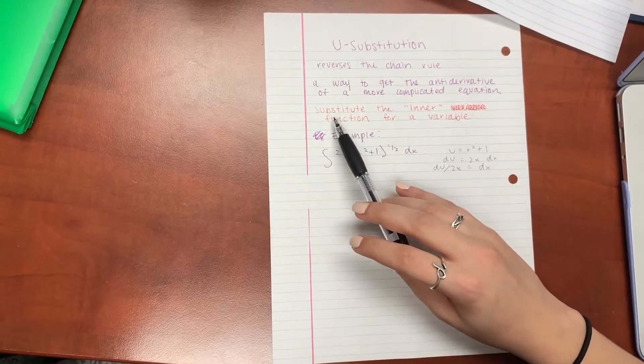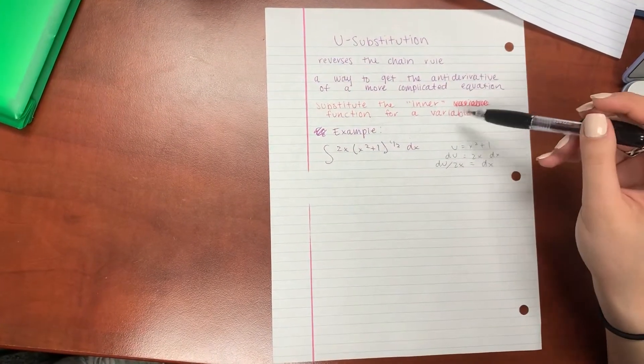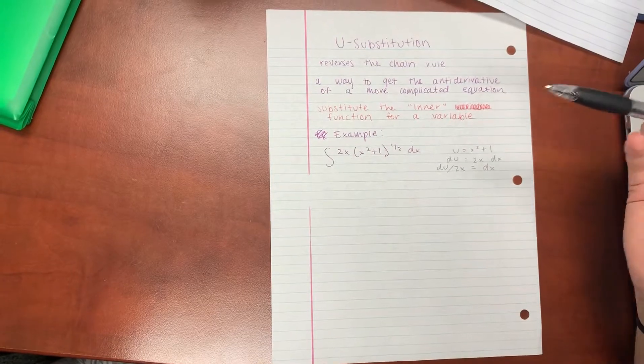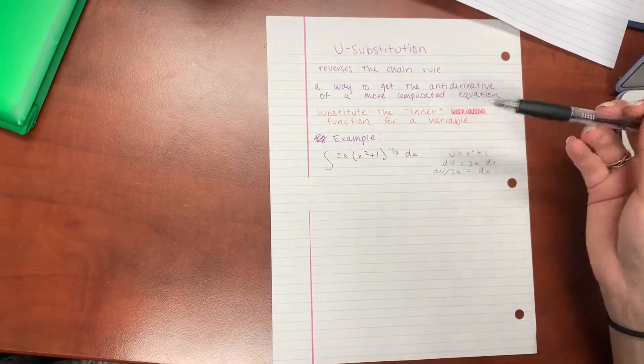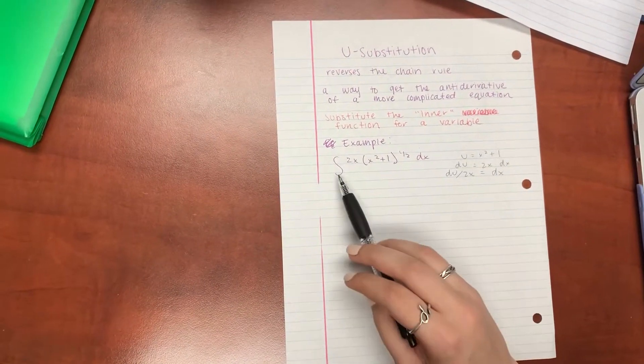So the way that you do this is that you just substitute the inner function for a variable, and this will make more sense once we get into our example, which I'm going to do right now actually.